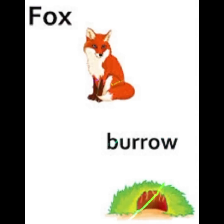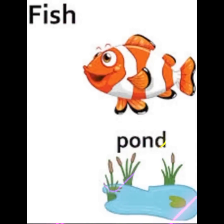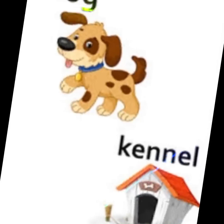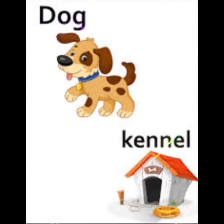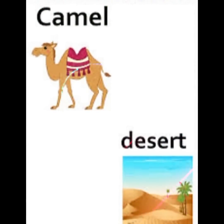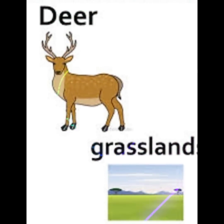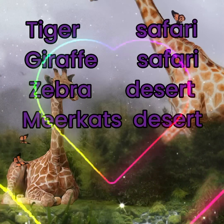Fish — fish lives in ponds, fresh water lakes, and rivers. Dog — dog lives in a kennel. Camel lives in the desert. Deer lives in grassland, safari, and jungle.